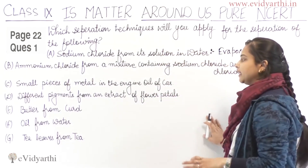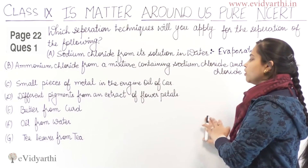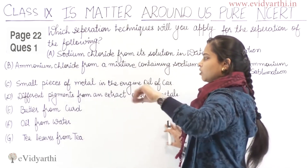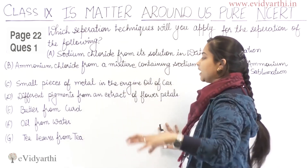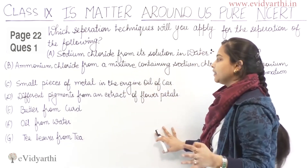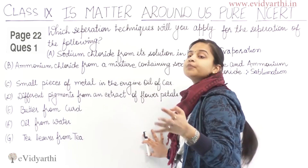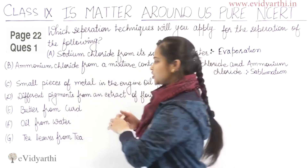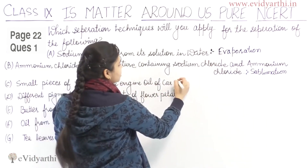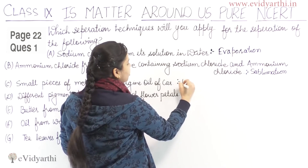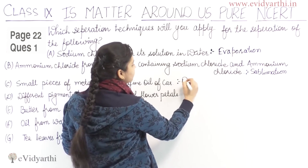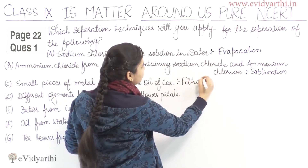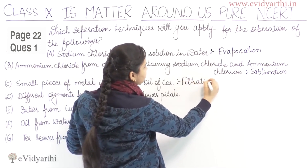Part C: Small pieces of metal in the engine oil of a car. The engine oil will be separated through the process known as filtration. It is very easy to filter the engine oil and get the metal pieces out. The process is filtration.